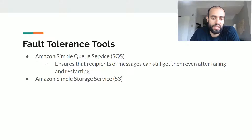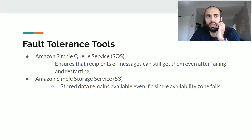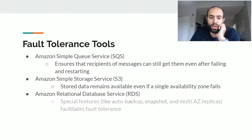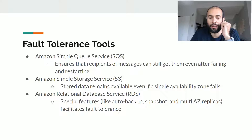Another example is the S3 service — stored data remains available even if a single availability zone fails. This is one of the defining characteristics of S3. Likewise, we have RDS, which has several fault-tolerant tools built into it, such as auto backup, multi-availability zone replicas, and snapshots, among others.